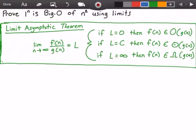And if our limit L equals C, where C is some constant value that's greater than zero, then our function f(n) belongs to Theta of g(n). And our third case, if our limit L is equal to infinity, then our function f(n) belongs to Big-O of g(n).